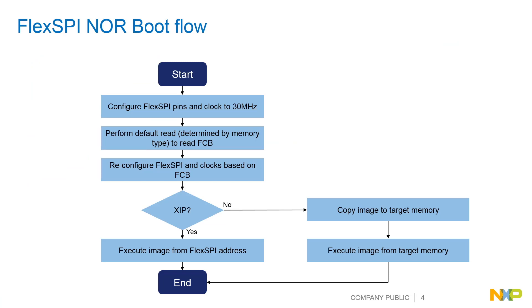This diagram shows the flow the ROM will follow for a FlexSPI NOR boot. To start, the ROM is going to configure the FlexSPI pins and the clock for 30 megahertz operation. Then it performs a default read from the flash in order to read the FCB information. The default read used to get the FCB into the ROM is determined based on your boot configurations, which can come from GPIO override values or fuses depending on your boot mode settings. After the FCB has been read, the ROM will then use the parameters within the FCB to reconfigure the FlexSPI block for the optimal configuration specified by the FCB. Typically this is going to increase the frequency so that the rest of the boot data and the application can be read in much faster.